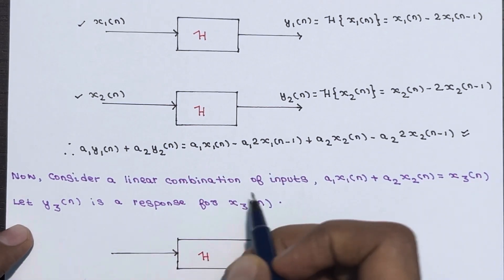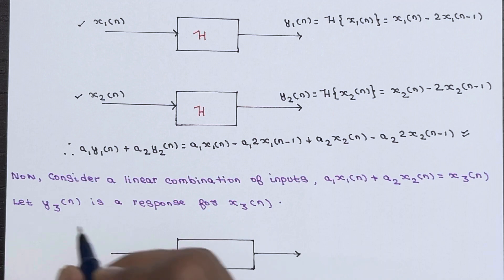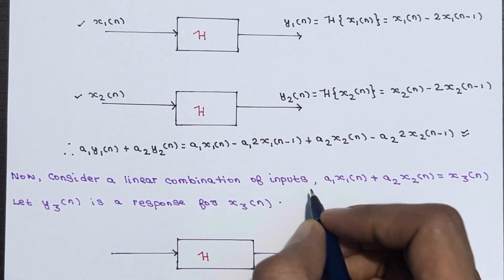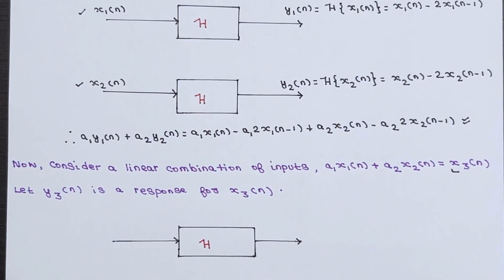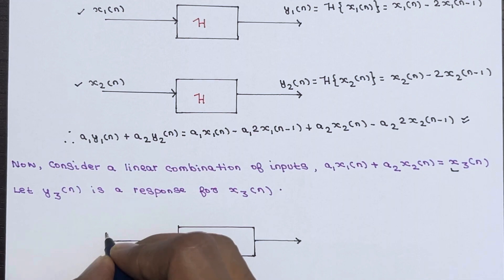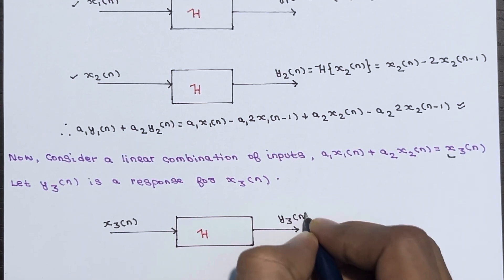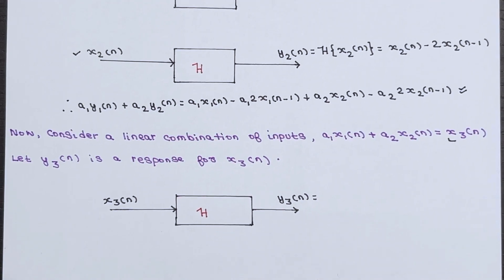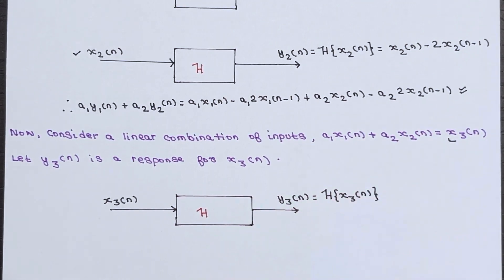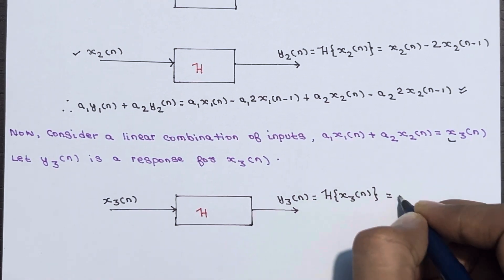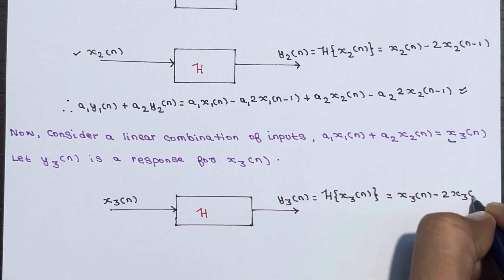Now consider a linear combination of inputs. We are going to apply the linear combination of inputs to the same system h and see the response. Let x3(n) = a1·x1(n) + a2·x2(n), and let y3(n) be the response for x3(n). When you apply x3(n) as input to the system, you get y3(n) = x3(n-2) · x3(n-1).